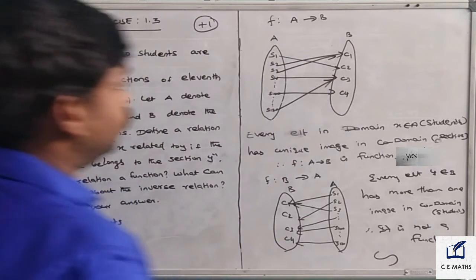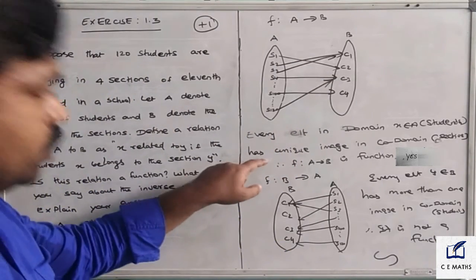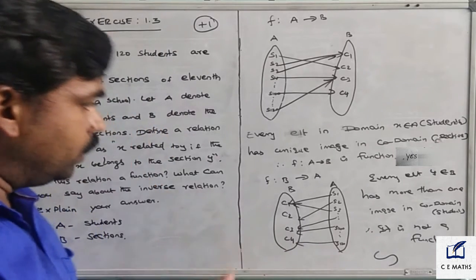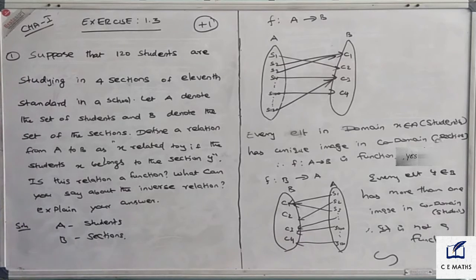First, F from A to B in that direction is a function. But the inverse, from classroom to students - since each classroom has more than one student - is not a function. Thank you.